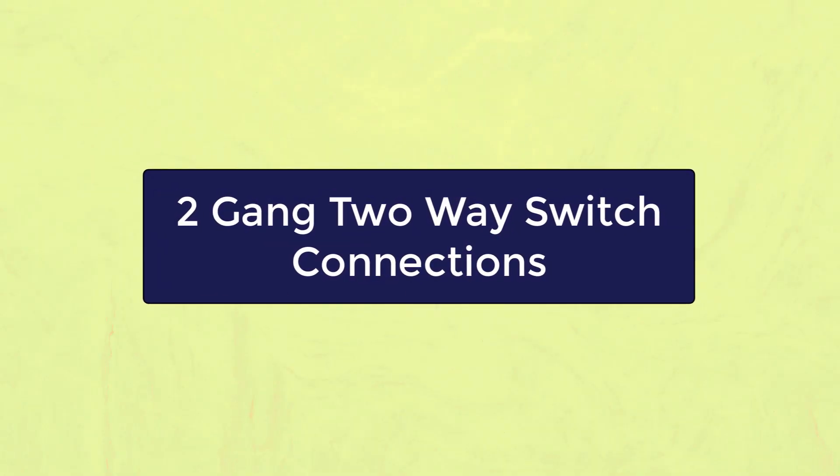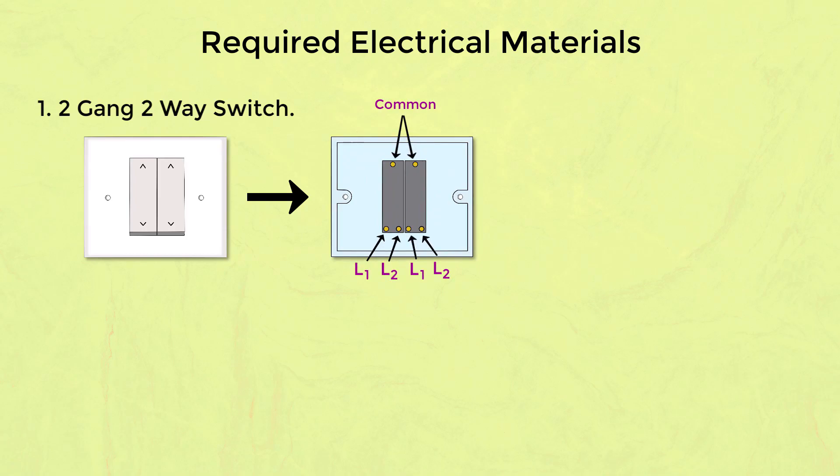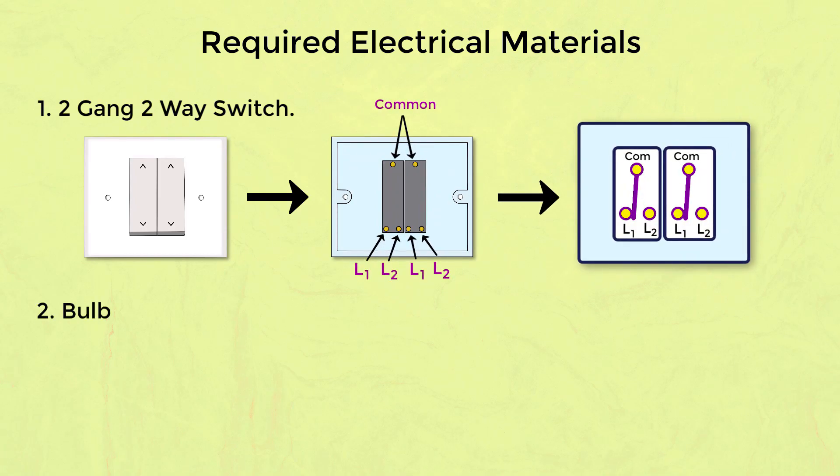Two gang two-way switch connection. Required materials: here we need a two gang two-way switch. This is the front side of the switch, this is the back side of the switch, this is the inside working of the switch.